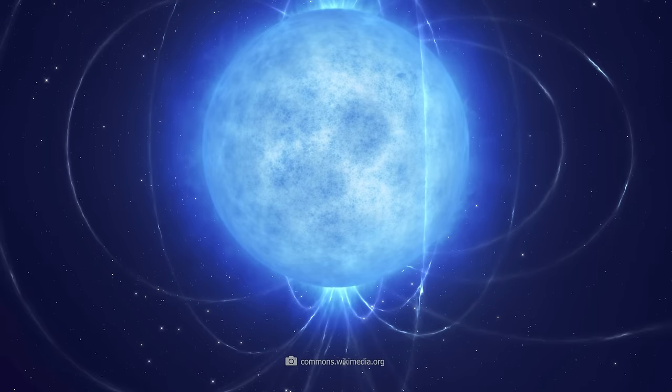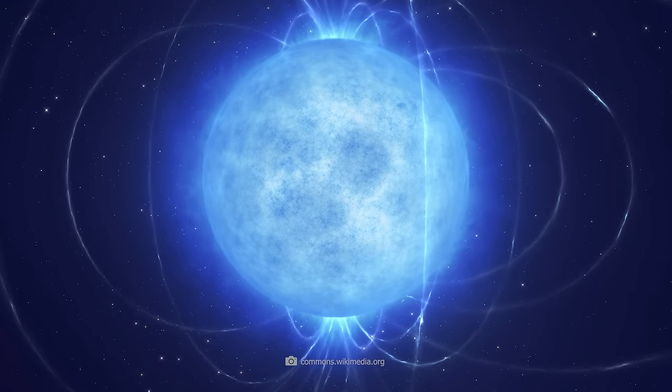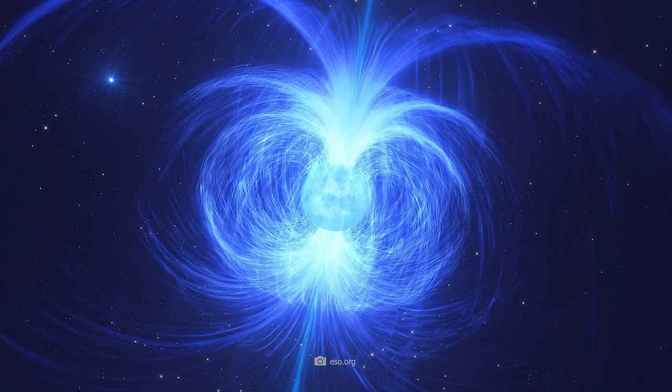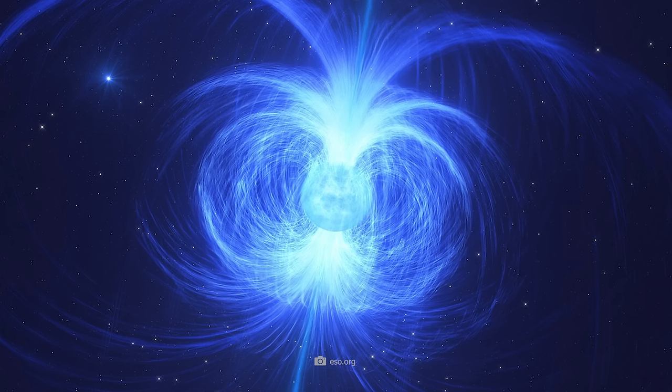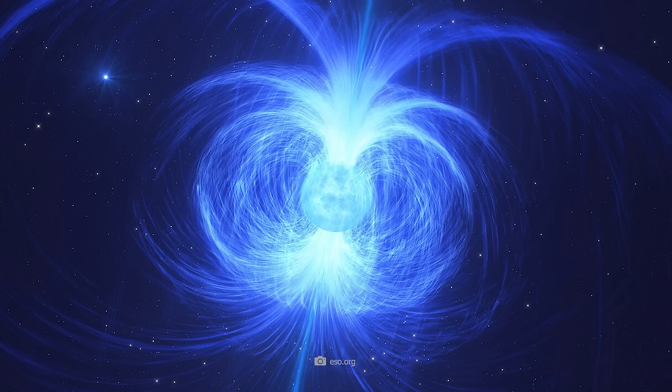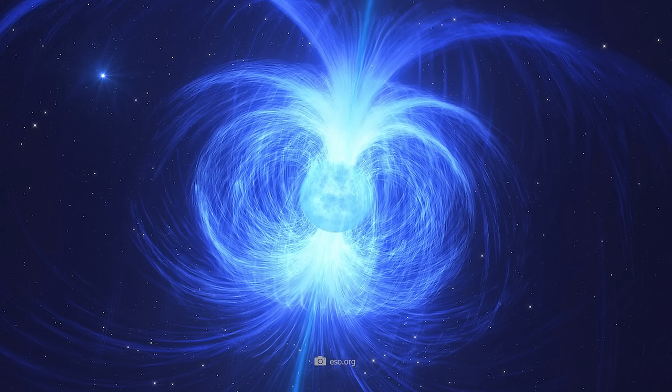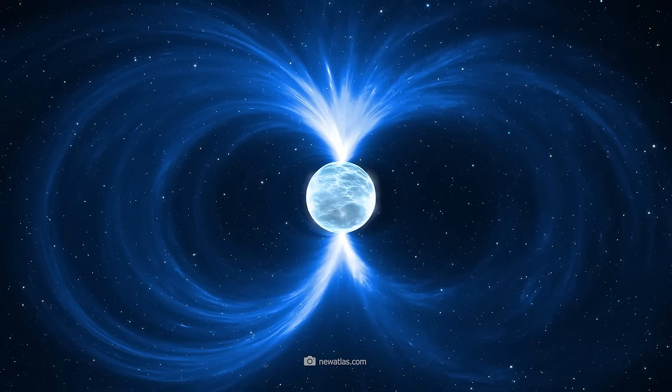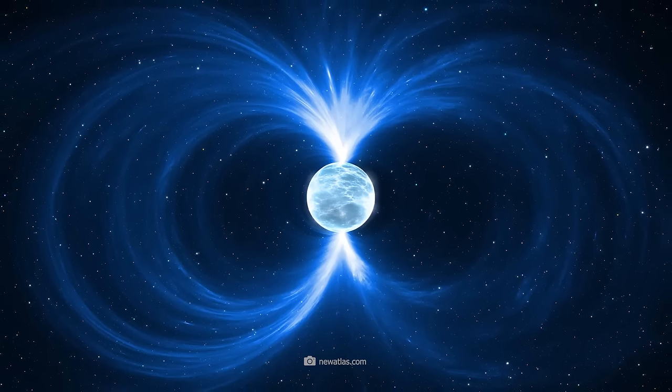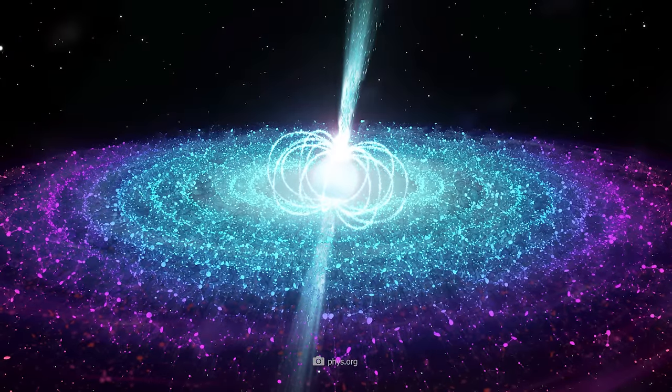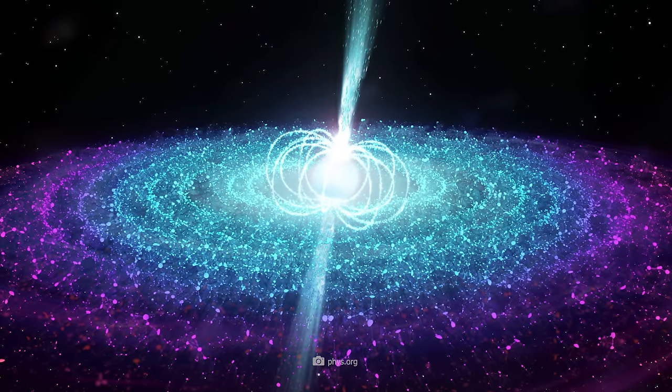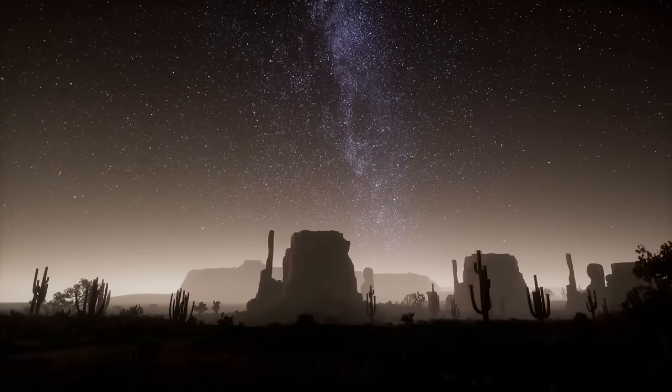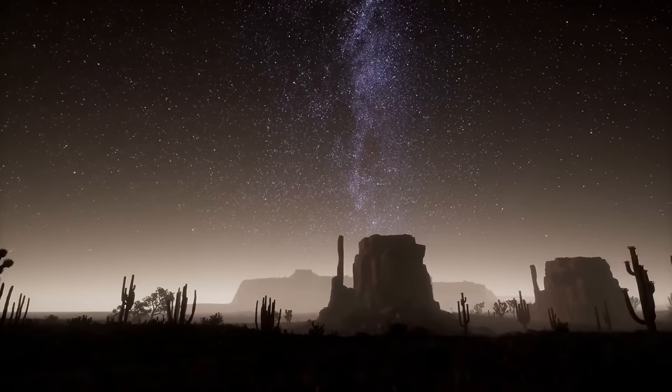Magnetars impress with their extremely strong magnetic fields. Magnetar originated from the combination of magnet and star. These neutron stars have the strongest known magnetic fields in the universe, which are up to 1,000 times stronger than those of typical neutron stars and up to a quadrillion, or 10 to the power of 15 times stronger than the Earth's magnetic field. These enormous magnetic fields generate intense electromagnetic radiation and, in addition to X-rays, can send dangerous gamma rays into space.